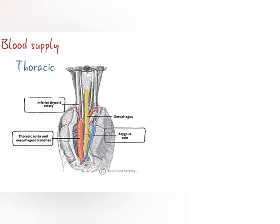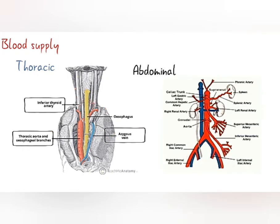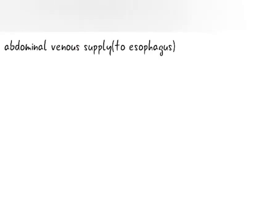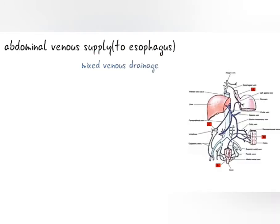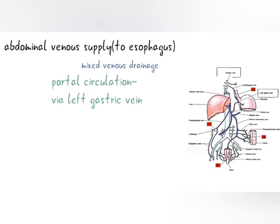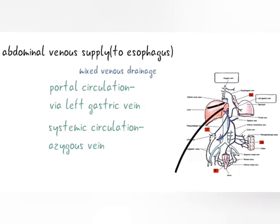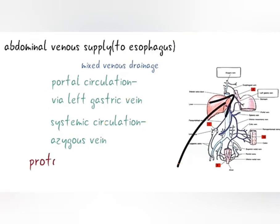In the abdominal area, the arterial supply is by the left gastric artery, which is a branch of the celiac trunk, and the left phrenic artery. Venous supply here is mixed venous drainage by two routes: the first route is portal circulation via the left gastric vein, and the second route is systemic circulation via the azygous vein. These two routes form a portosystemic anastomosis, connecting the portal and systemic venous systems.